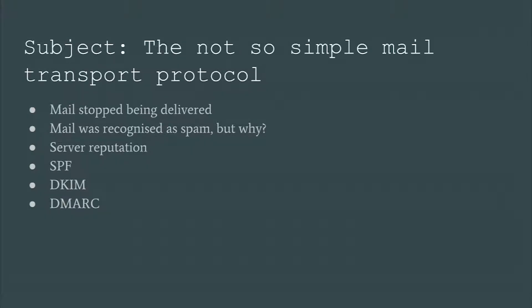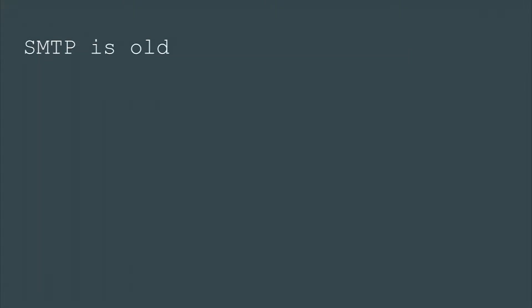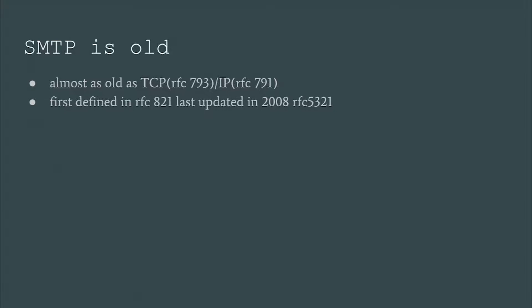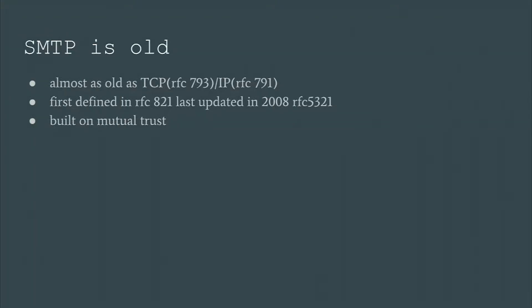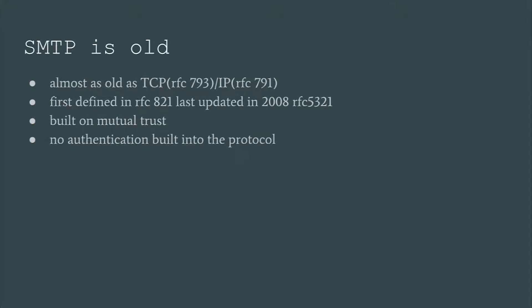Before I start telling you about SPF and the other acronyms, I have to give you some history into the SMTP protocol. The first thing you might know is that SMTP is an old protocol — it's as old as the internet. TCP and IP were defined in 1981, and SMTP was defined in 1982. At that time, the internet was still called the ARPANET, the precursor to the internet developed by the Department of Defense. Back then, the internet was really small, and pretty much everybody knew each other, so the internet was built on mutual trust. That meant there was no authentication needed in the protocol, and as such, there is no authentication built into the protocol itself.